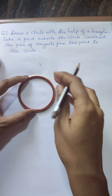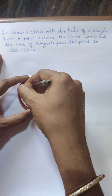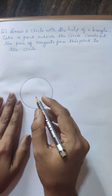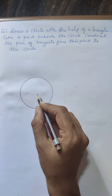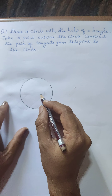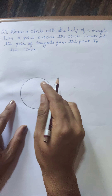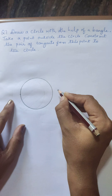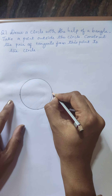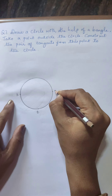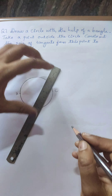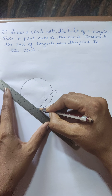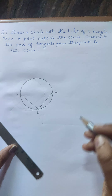We draw the circle with the help of the bangle. For the circle, we have to find the center. So let us take three points A, B, C — as we did in 9th standard — to find the center for a given circle.